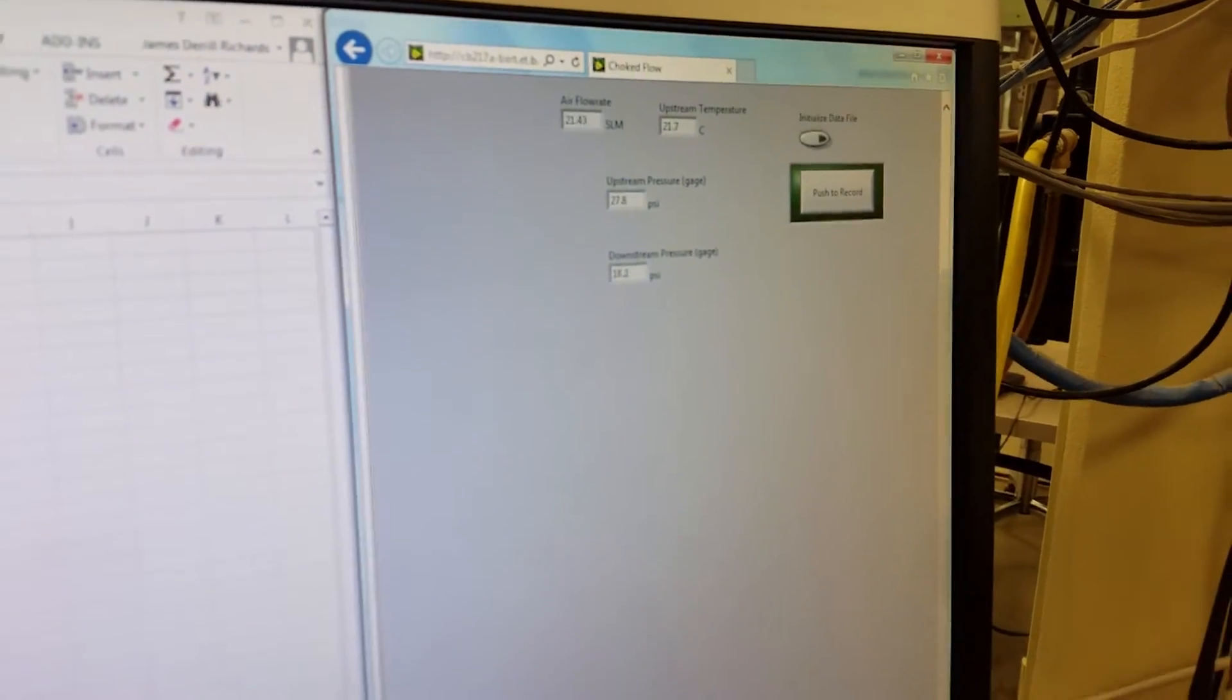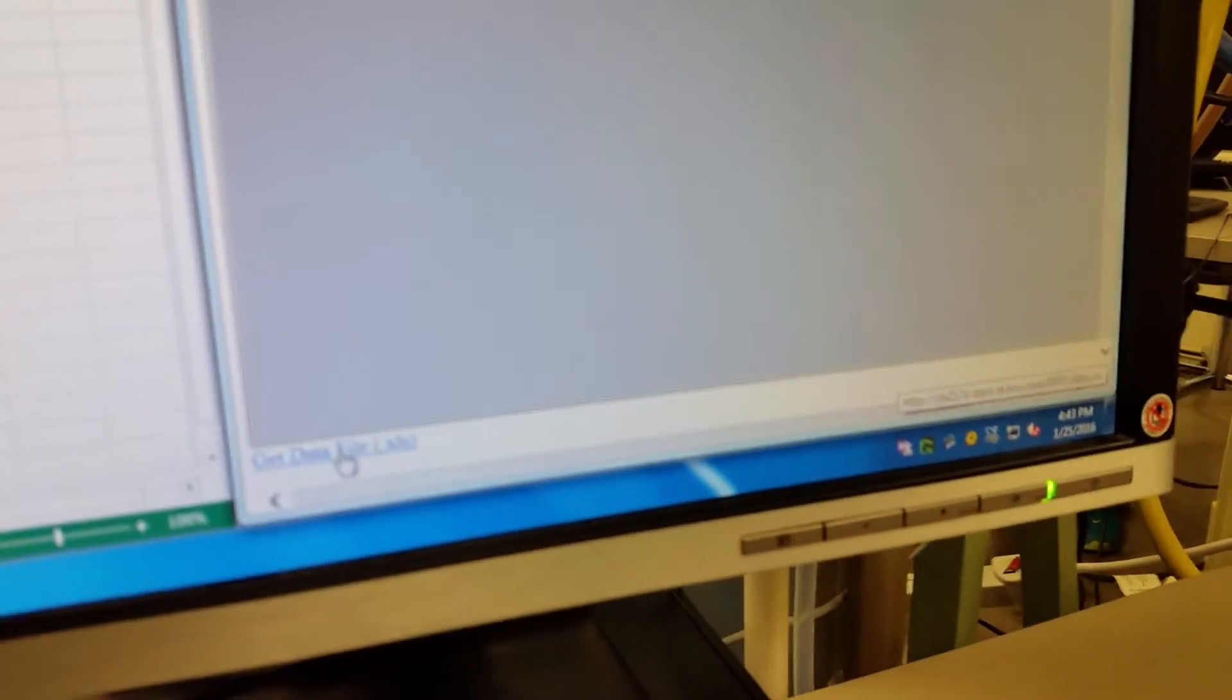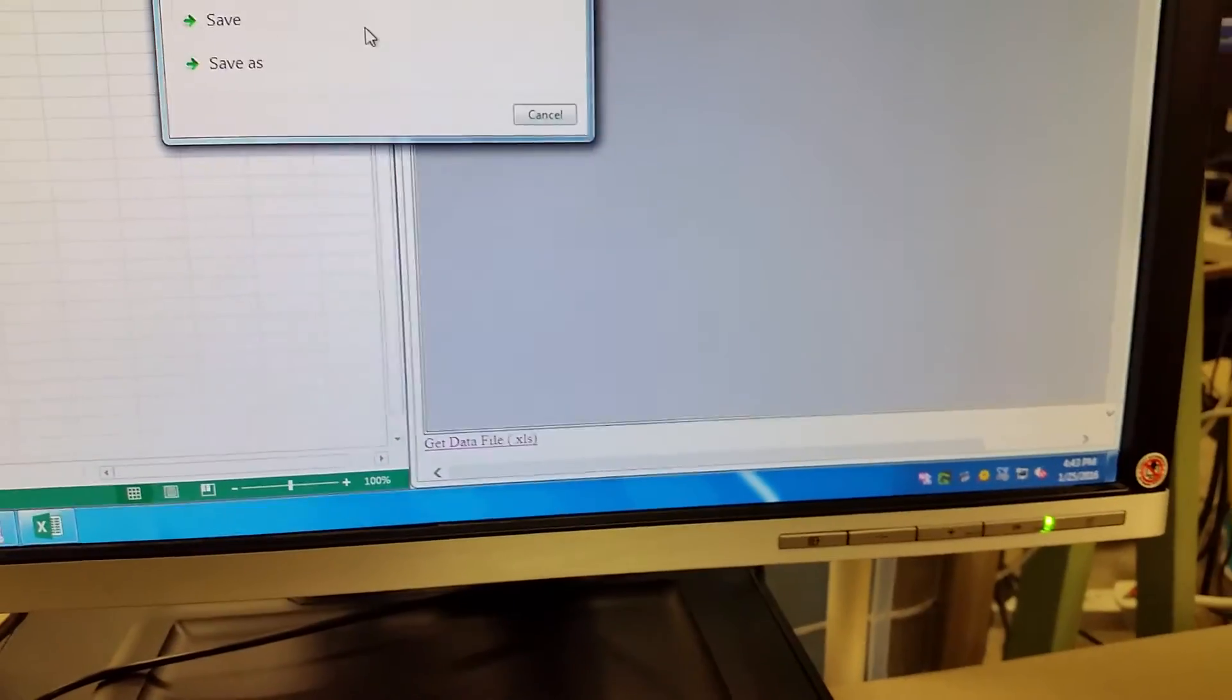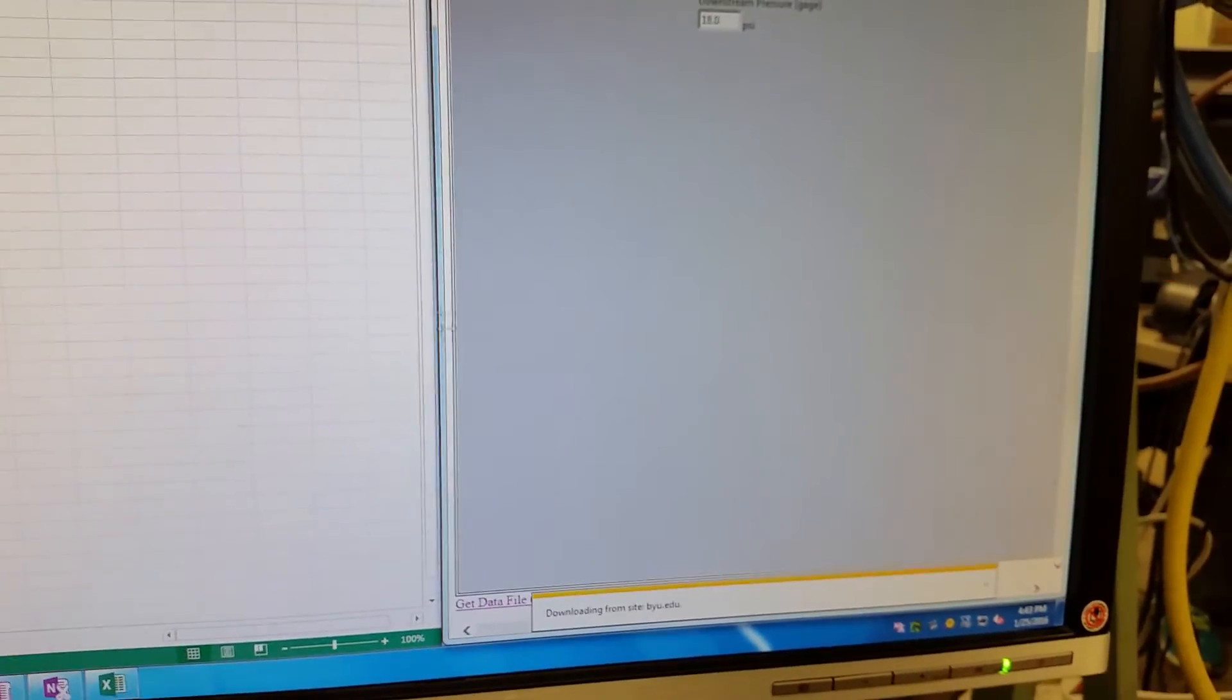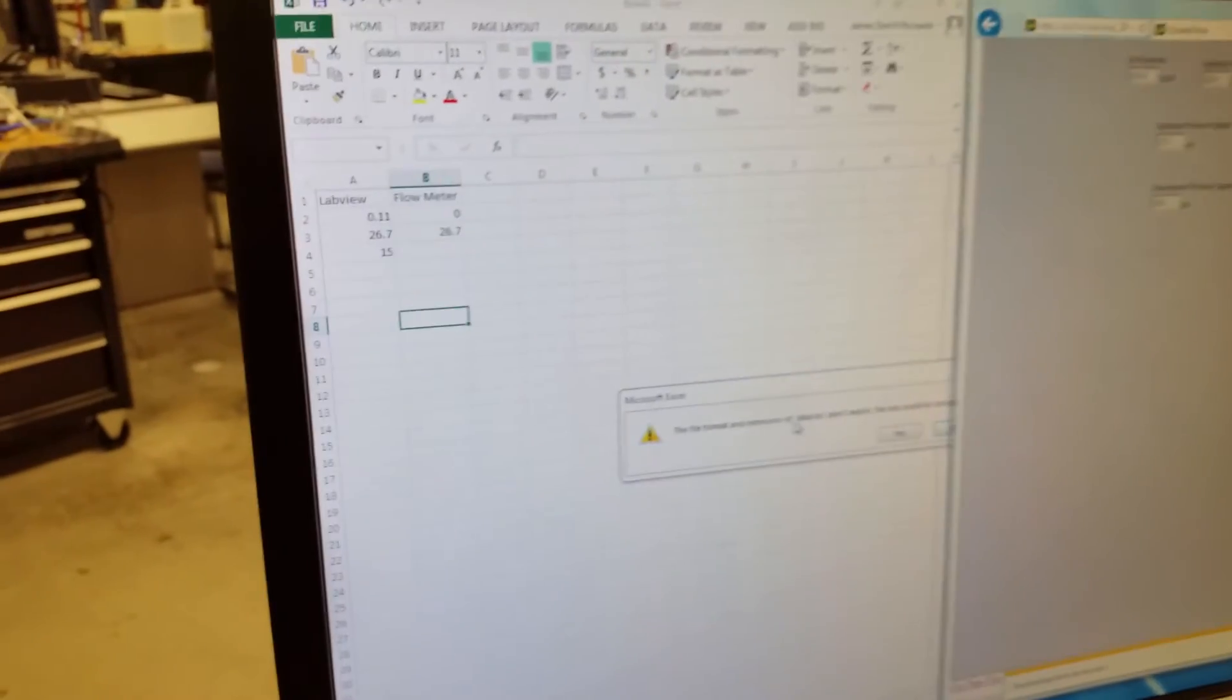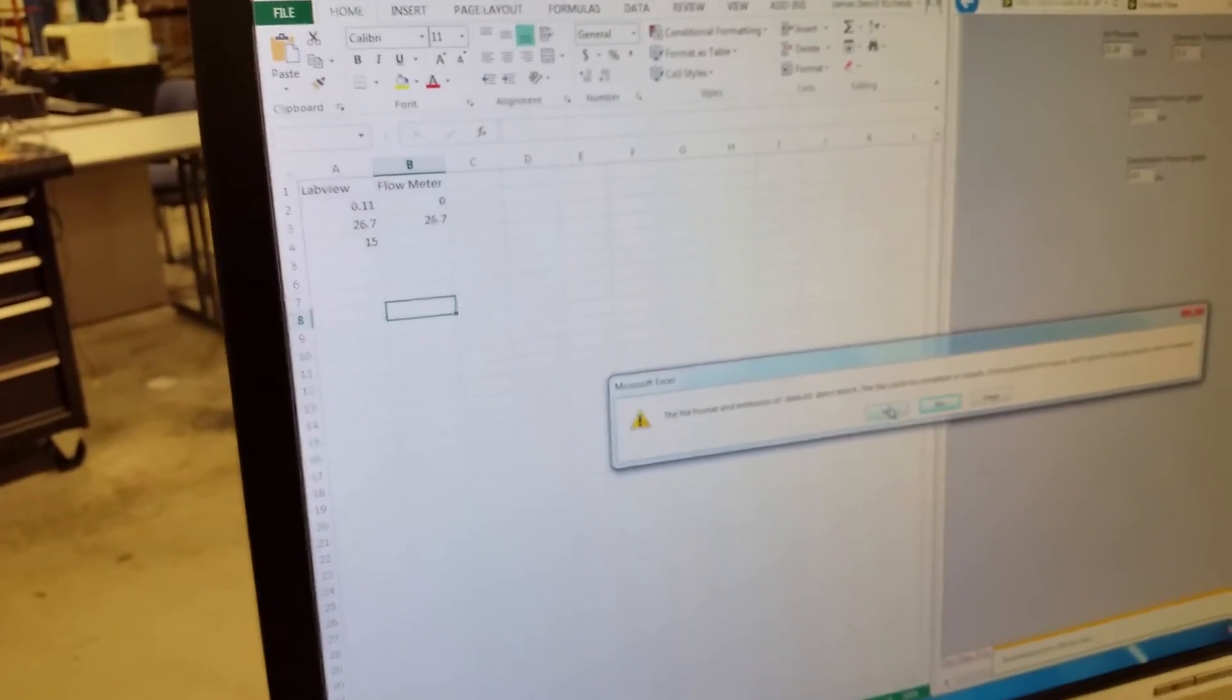Then you go to the bottom of the page, scroll to the bottom, and select get data file. Open it up and it will download. It'll say it doesn't match, if you just hit yes, it'll pull it up.